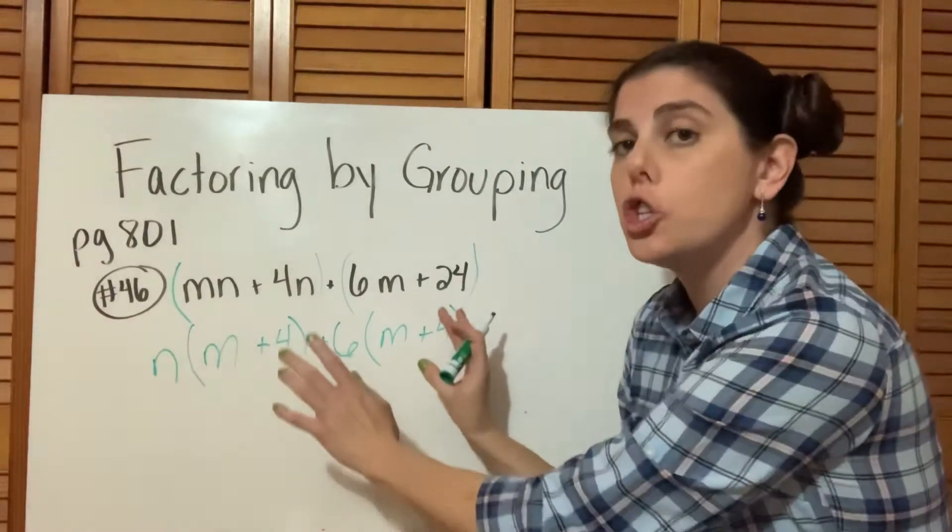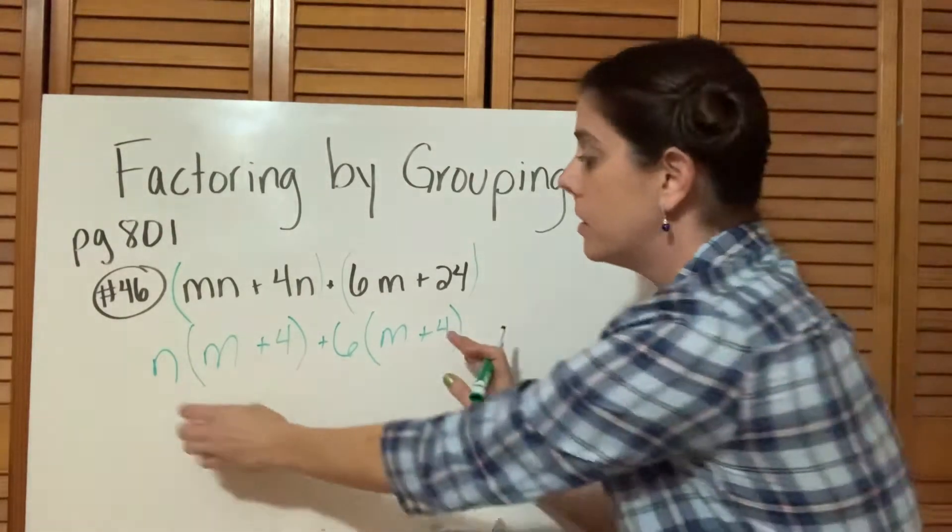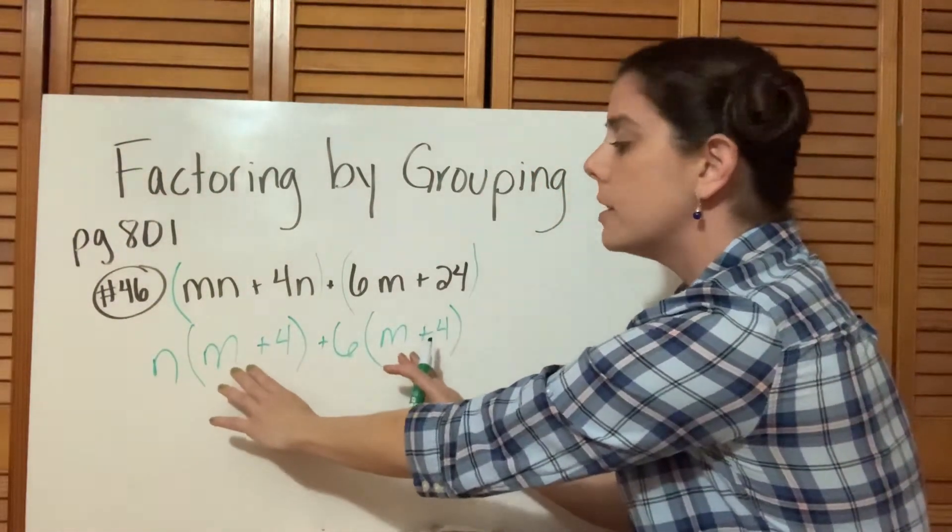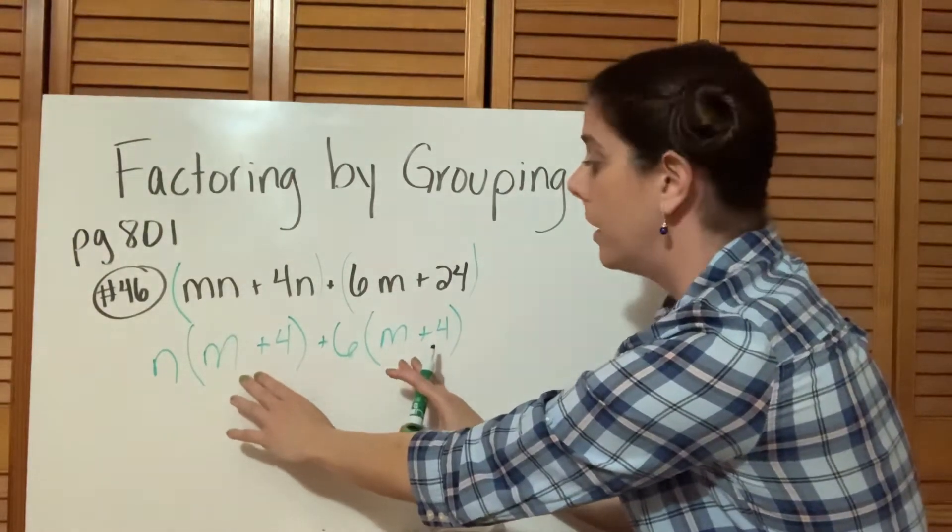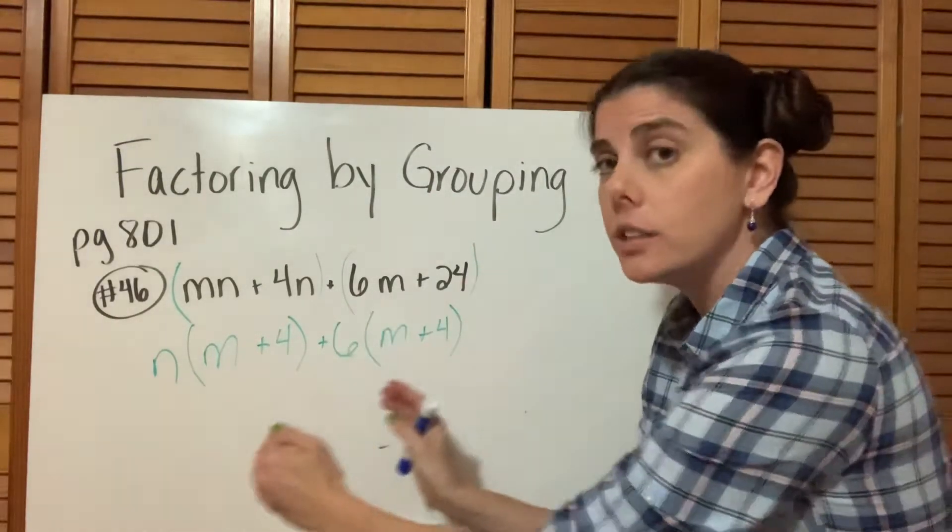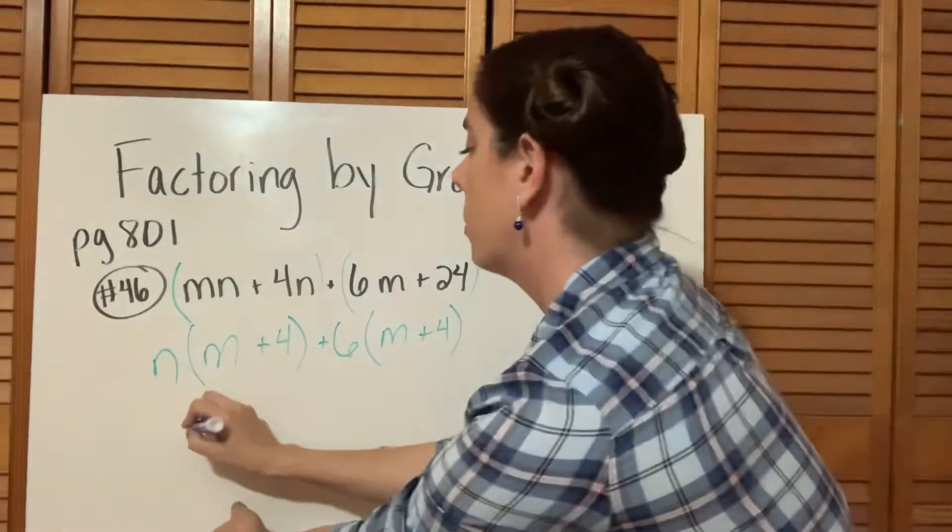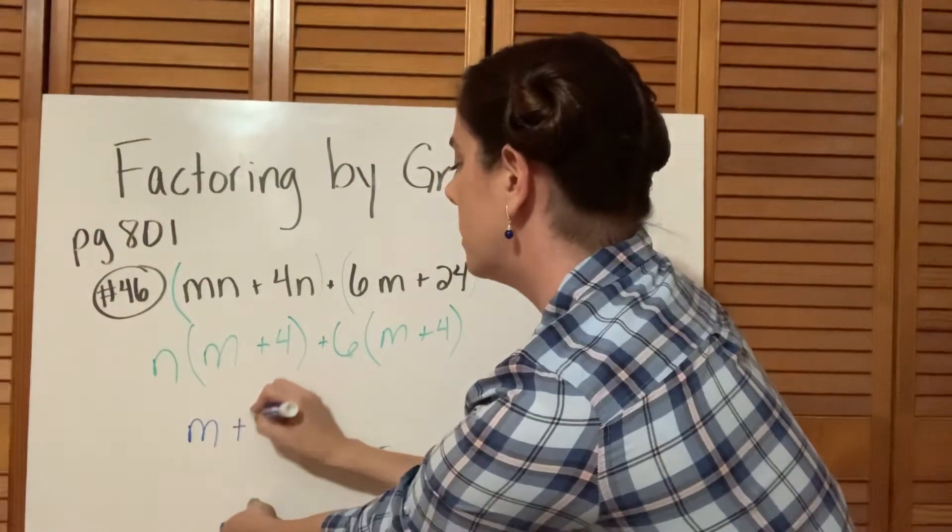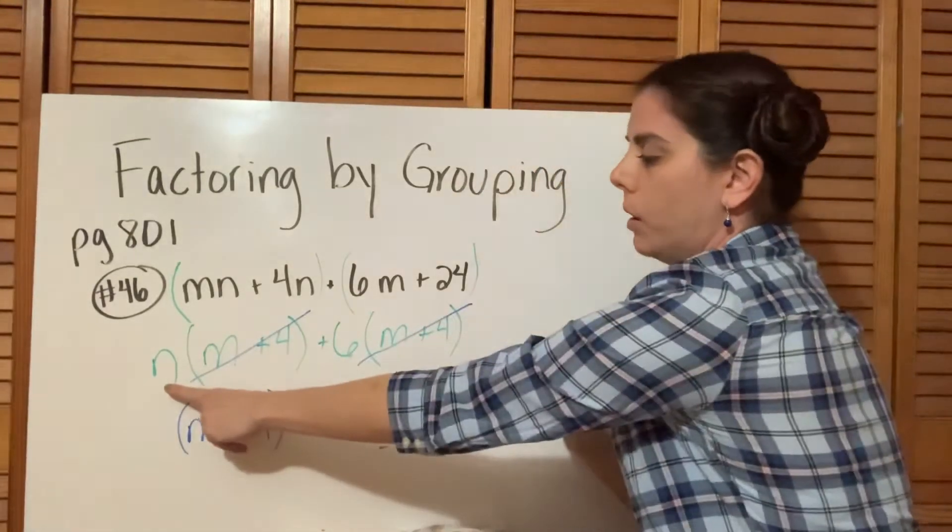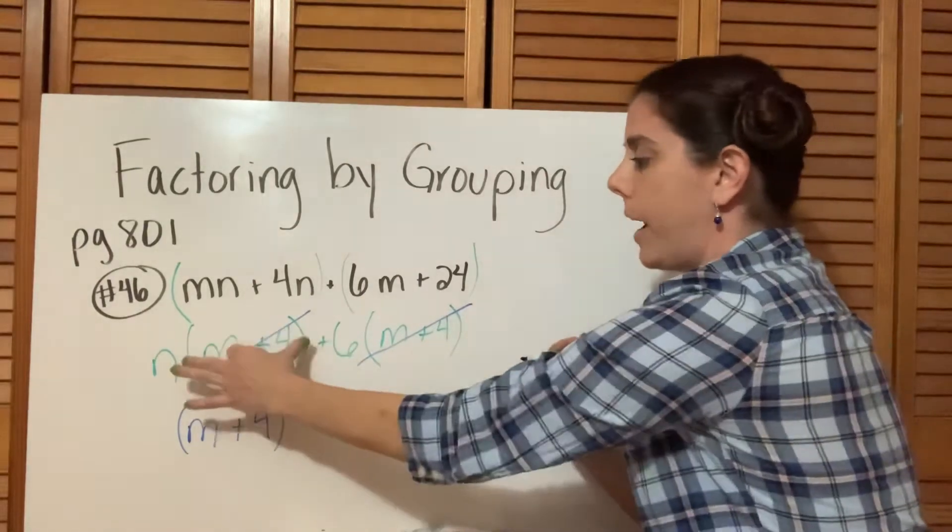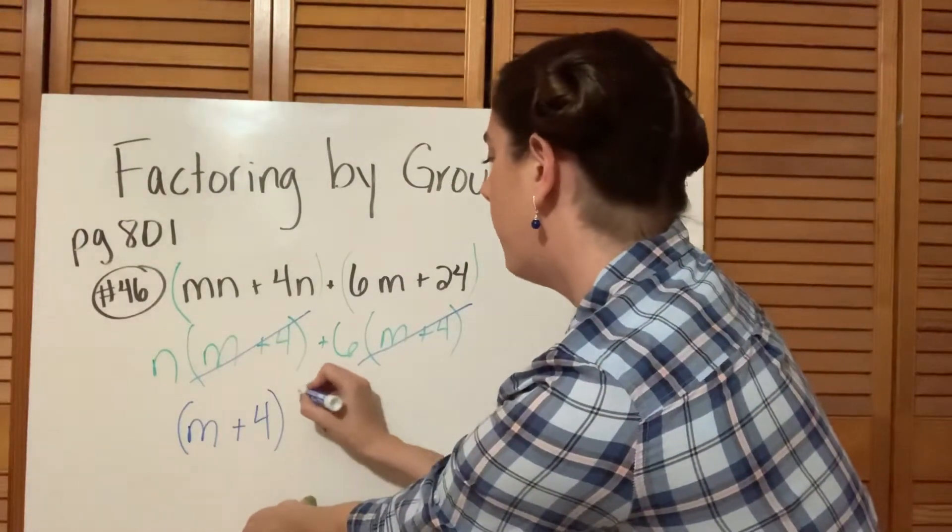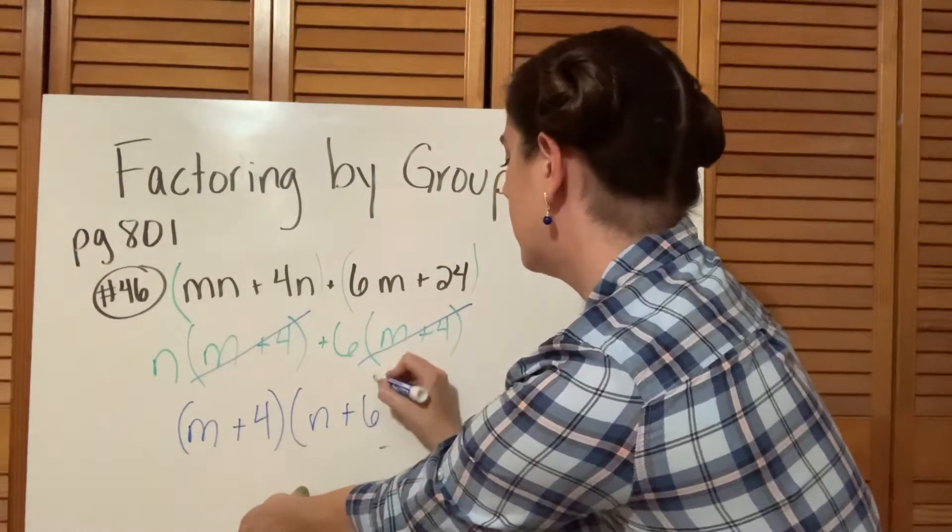Now we have two terms, correct? We have a term here, a plus sign, and then a term here. If you look, you can see each of these terms has something in common—they both have M plus 4. So we're going to factor that M plus 4 out and take it to the front like we always do. Taking the M plus 4 out of each term, what are we left with? N plus 6. So we factored out M plus 4 and what we have left is N plus 6.